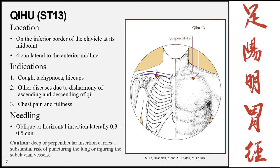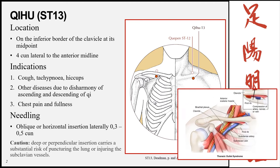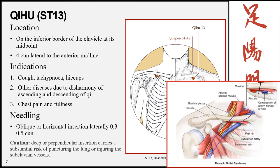The insertion for ST13 is oblique or horizontal in a lateral direction, 0.3 to 0.5 cun — going away from the lungs, which lie beneath. There is a caution against deep or perpendicular insertions as both carry a substantial risk of puncturing the lungs. The subclavian vessels also run deep to this point, and deeper insertions risk injuring them. Inserting laterally avoids any important blood vessels or organs.